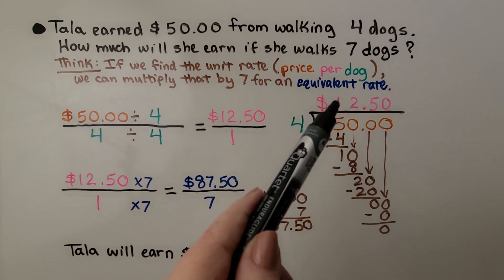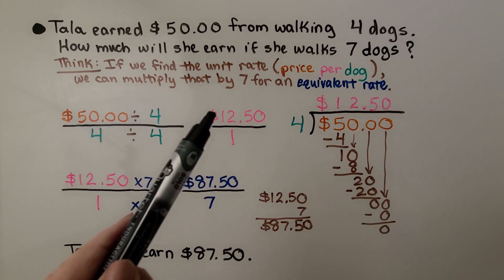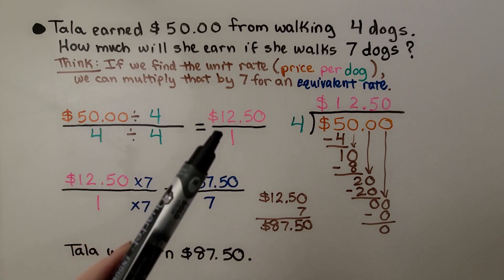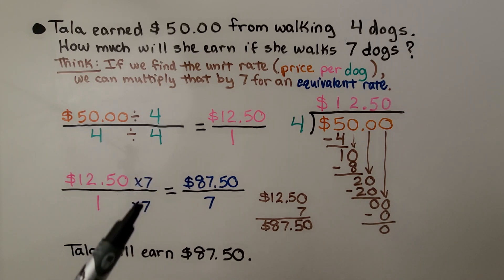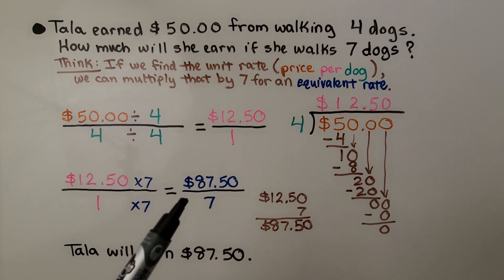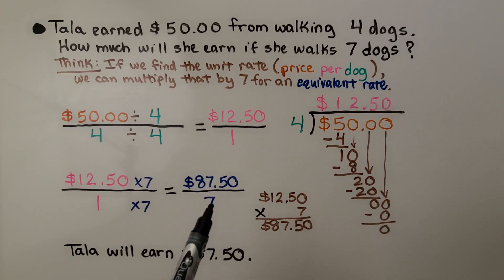Our unit rate is $12.50 to walk one dog. Now we can multiply the unit rate times seven to find out how much she'll earn for seven dogs. We can do a little multiplication and see that it's $87.50 for seven dogs. This is the equivalent rate. Tala will earn $87.50.